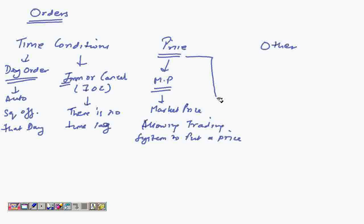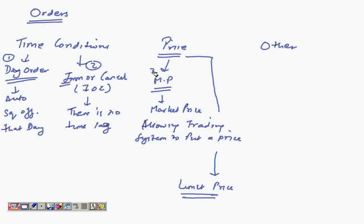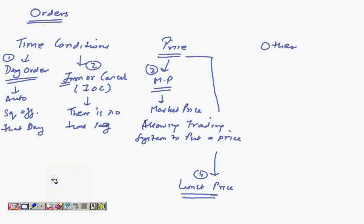Similarly, there's another concept called the limit price. So looking at time conditions 1 and 2, and price conditions 3 and 4 — what does the limit price do? In a limit price, you are basically giving a limit price for the order. Let's share it with an example.